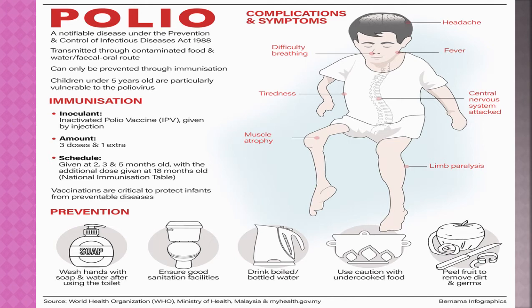Polio is transmitted through contaminated food and water and the fecal-oral route, and can be prevented through immunization. Children under five years old are particularly vulnerable. Inactivated polio vaccine is given by injection — three doses plus one extra: at two, three, or five months old with an additional dose at 18 months. Vaccinations are critical to protect infants from these preventable diseases.